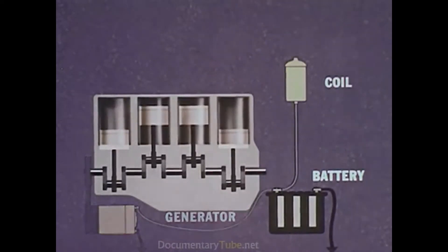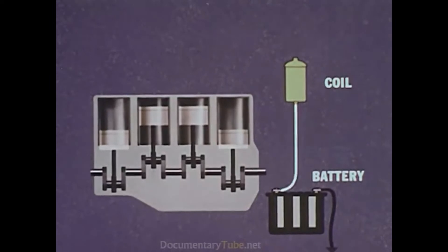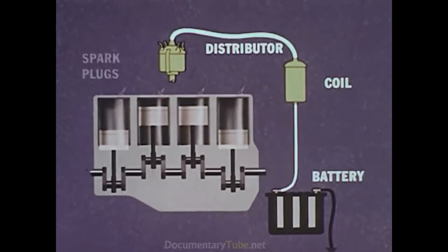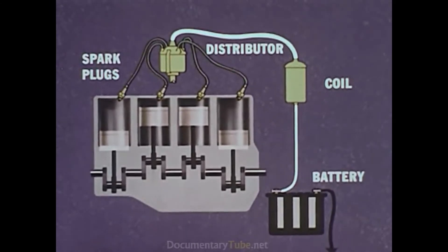The battery supplies electricity to the coil, which boosts the current to a voltage high enough to produce a spark, and then sends it through the distributor to the spark plugs located in the cylinders.